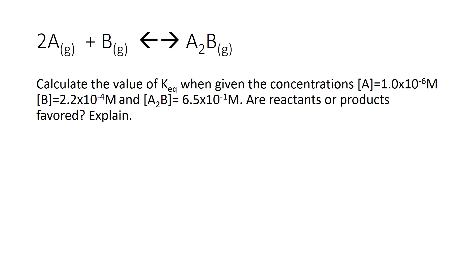This is a great example problem because it really ties together everything we've learned. We are using A and B and A2B as our reactants—they're not real chemicals or compounds, but it will get the point across. We are asked to calculate the value of K when given particular concentrations for each of our substances. Then we're asked if the reactants or products are favored, which we'll know if K is above 1 or below 1.